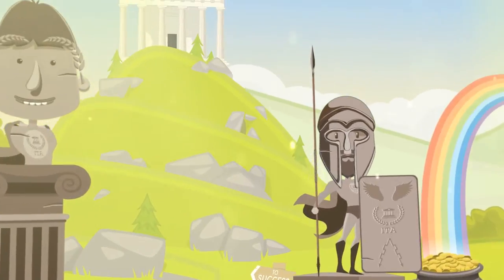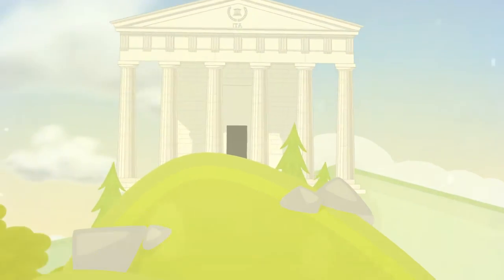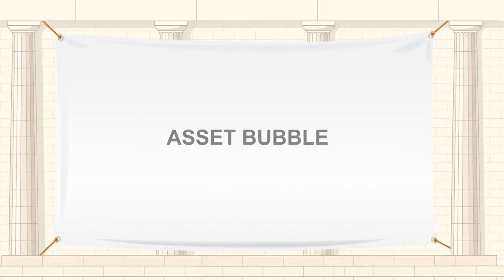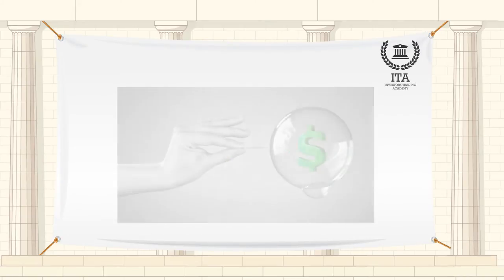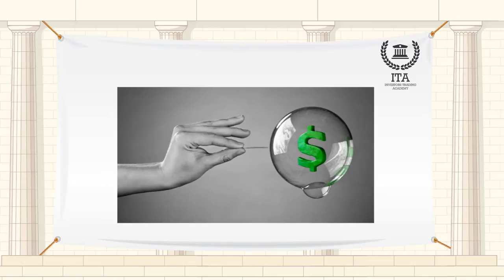Welcome to the Investors Trading Academy talking glossary of financial terms and events. Our word of the day is Asset Bubble. The term bubble refers to an episode where the price of a financial asset rises significantly, often in response to speculation, which results in the asset trading at a substantial premium to its intrinsic value.